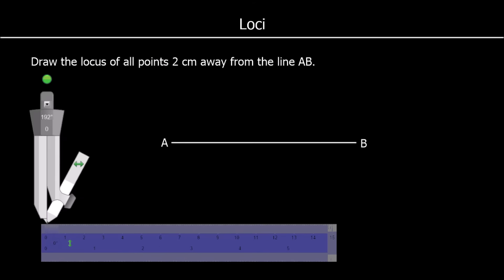This question says draw all of the points 2 cm away from the line AB. So for point A it would be a circle, and for point B it would be a circle. But then we're going to have a straight line in the middle.